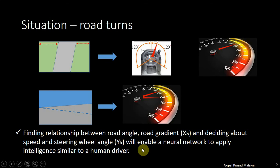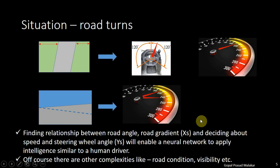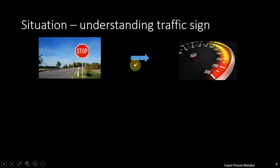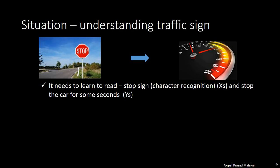The moment you can establish these relationships, a computer program can exhibit intelligence similar to a human driver. This is a simplistic case — there will be complexities like road condition and visibility that will also decide the driver's speed. Another situation a computer program needs to learn: a traffic sign. If it sees a stop sign a number of times, it means it needs to stop for some seconds. For this, character recognition becomes very important.